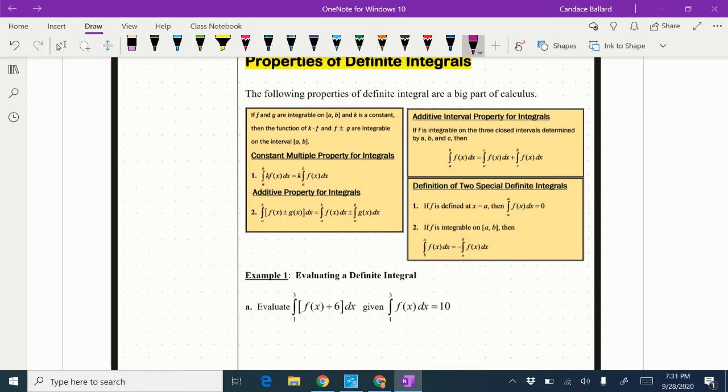So as long as we have that they can be integrated, we can integrate a constant times it, and we can integrate them added together. So the constant multiple property says basically if I have a number on the inside I'm allowed to bring that number to the outside of the integration sign. If we are adding two functions together we are allowed to add or subtract them separately to get them integrated.